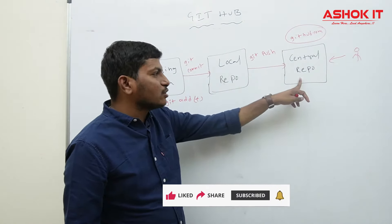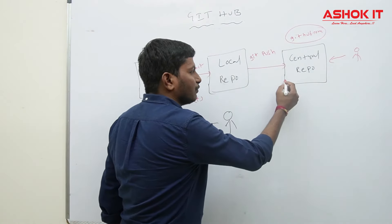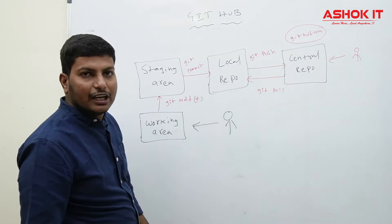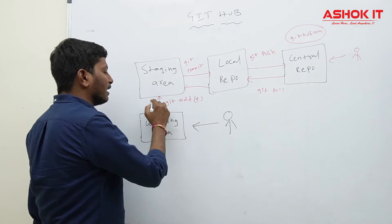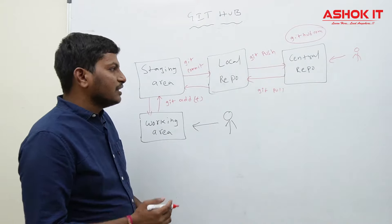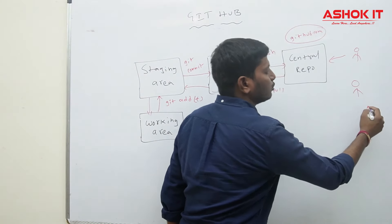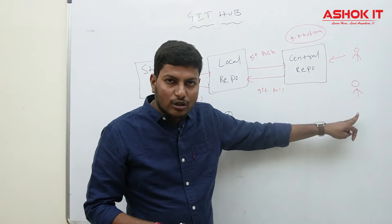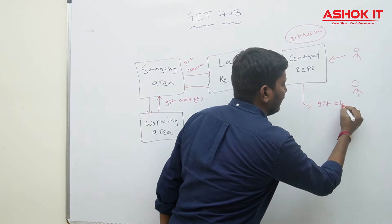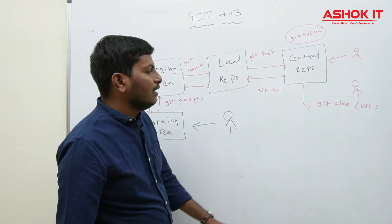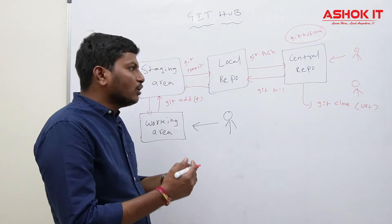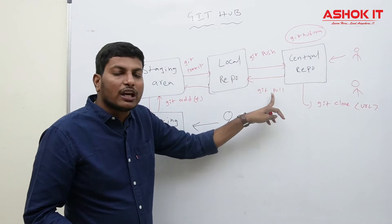Suppose other developers have stored their code into the central repository and you want to take the latest code. To take the latest code from the central repository, we execute the git pull command. When we execute git pull, the latest changes come to our local repository, and from there to our working area. For a new developer who just joined and wants to download the entire project, they use git clone followed by the repository URL.